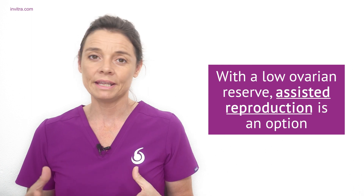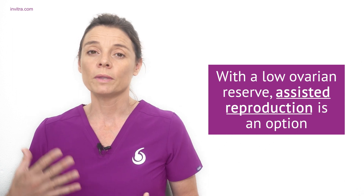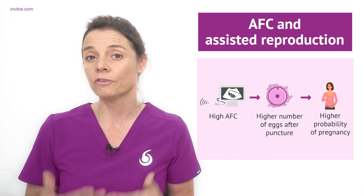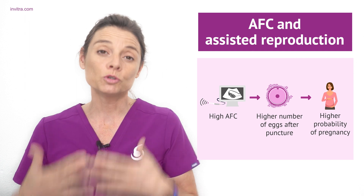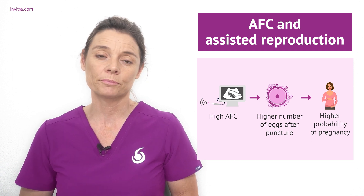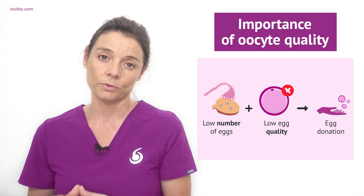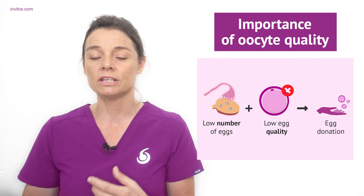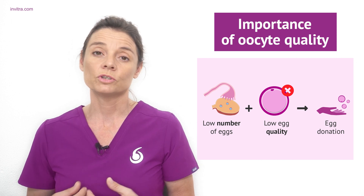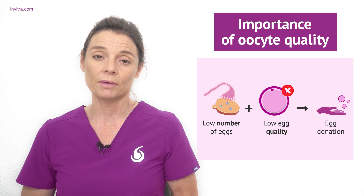Having a low ovarian reserve doesn't mean that you're not going to be able to have children — this is where assisted reproduction treatments come in. We need to know the ovarian reserve so we can decide on the best course of treatment for the individual patient. For example, if we perform an antral follicle count and see the value is good, there may be a good response to ovarian stimulation for an IVF cycle. The more eggs we get the more chances that we can produce a viable embryo that will lead to a future pregnancy. However it isn't just the quantity of the eggs that is important but also the quality, and as a woman's age increases the quality of her eggs also decreases due to things such as accumulated chromosomal abnormalities or genetic damage. So for older women with a lower ovarian reserve they may need to think about egg donation and IVF in order to become a mother.